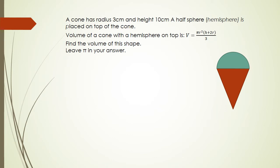In this situation, we've got a cone with radius 3 centimeters and height 10 centimeters. A hemisphere is placed on top. The volume of a cone with a hemisphere on top is given by this formula: V = πr²(h + 2r) / 3.